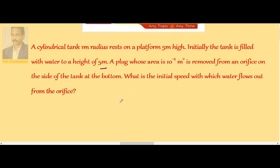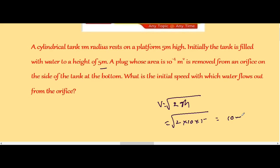We are interested only in the speed with which it comes out. We know that V is equal to root 2GH. So, 2 into 10 into 5 gives 10 meter per second. There is no need of the area of cross section and the height of the tank. So, it is 10 meter per second.